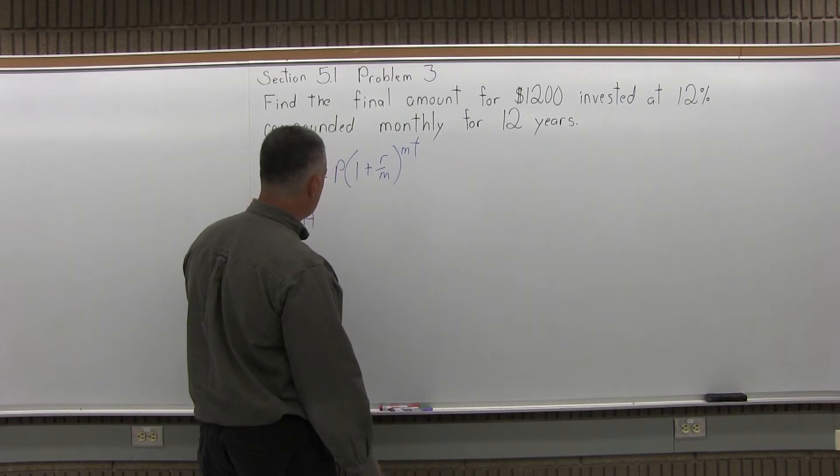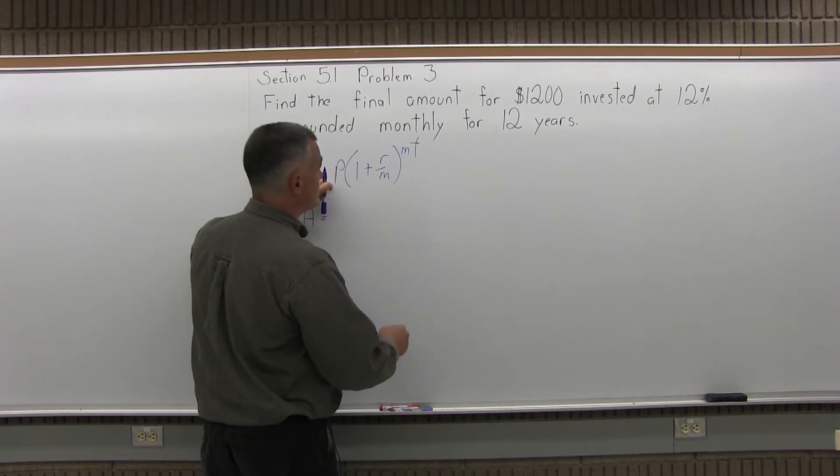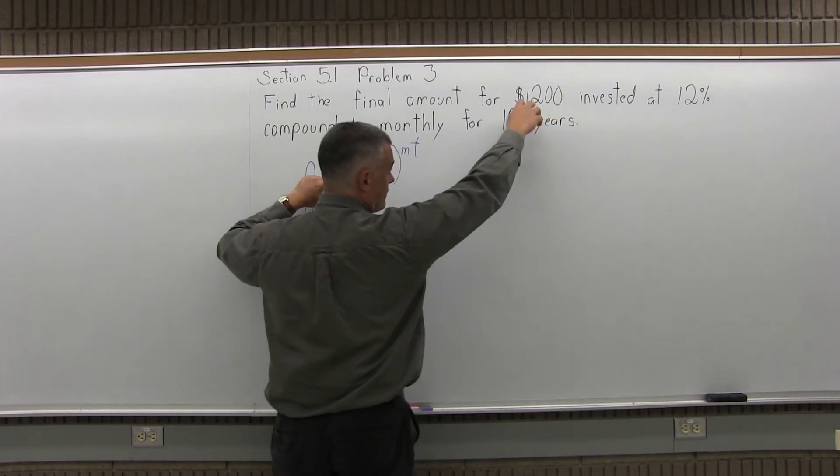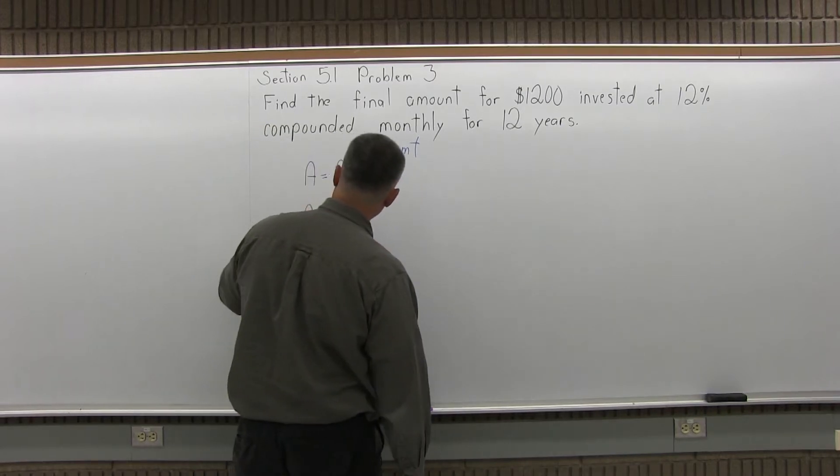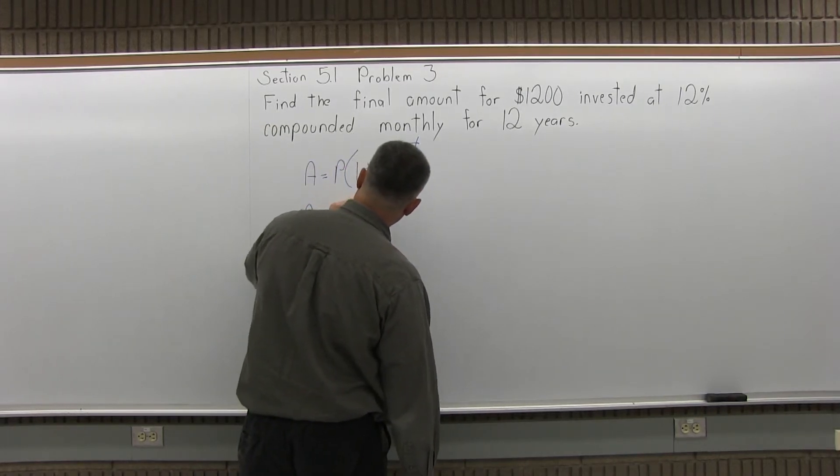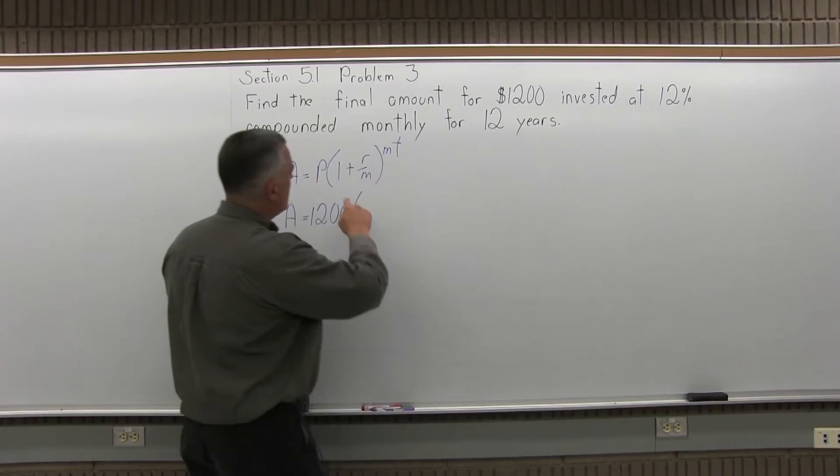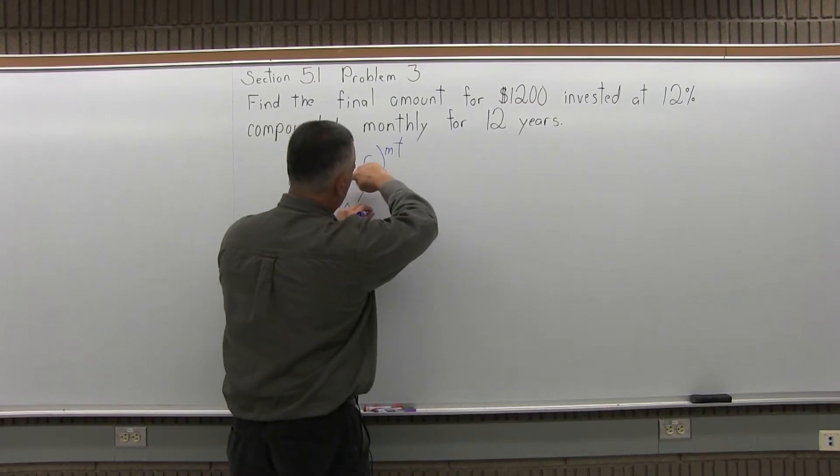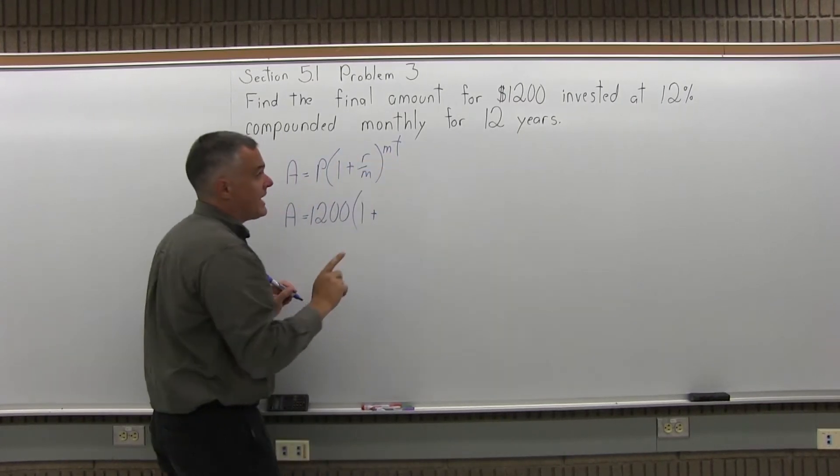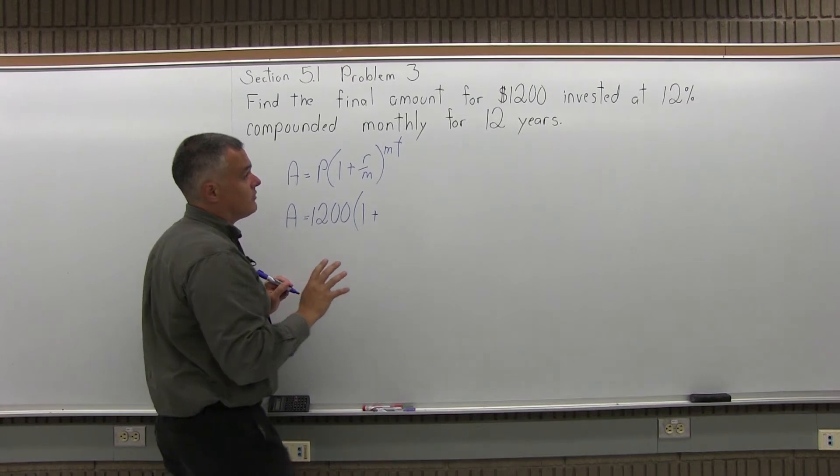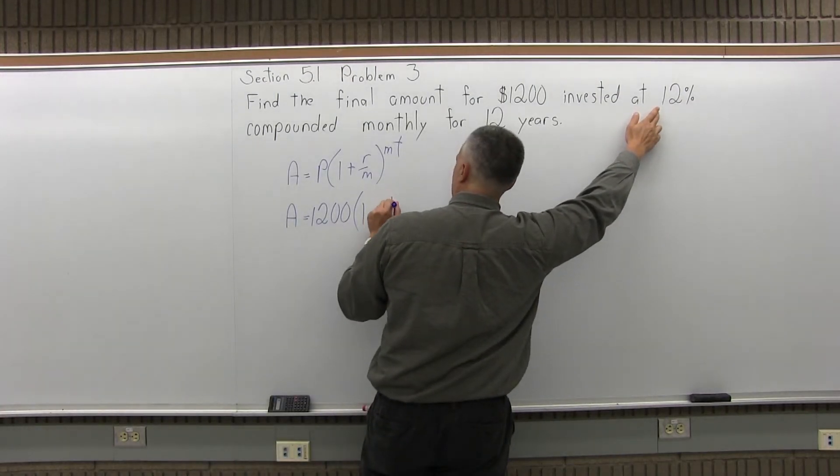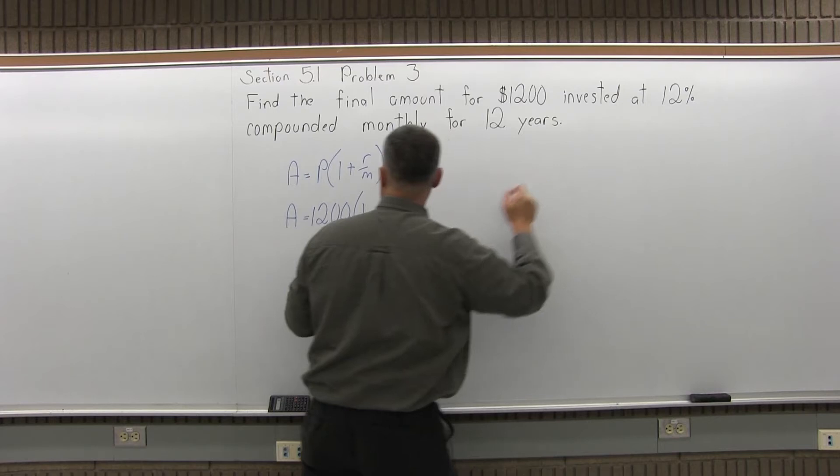So A, which is the final amount, equals P, the principal or initial investment which is $1,200 just like the previous problem. Very different formula though. One plus R, the rate as a decimal. So again the rate is 12% so as a decimal it's .12, that's important.